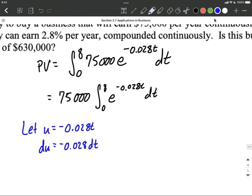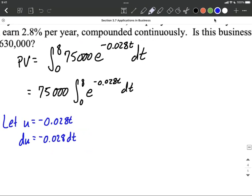Now, as we work on filling in here, we're going to bring along the 75,000. We're integrating E to the U power at this point, but we also have to replace the DT at the end. So this DT, I've got a DT over here, but I'm going to rearrange this just a little bit. So we have DT is 1 over negative 0.028 DU is going to get filled in.